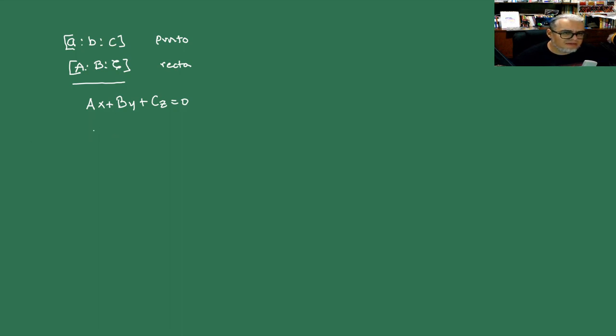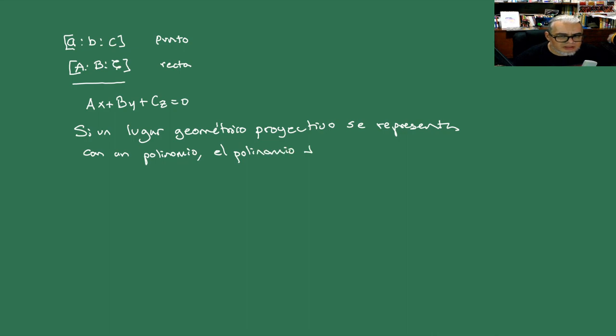Why is it important that it be homogeneous? If a projective geometric locus is represented with a polynomial, the polynomial must be homogeneous. Why?